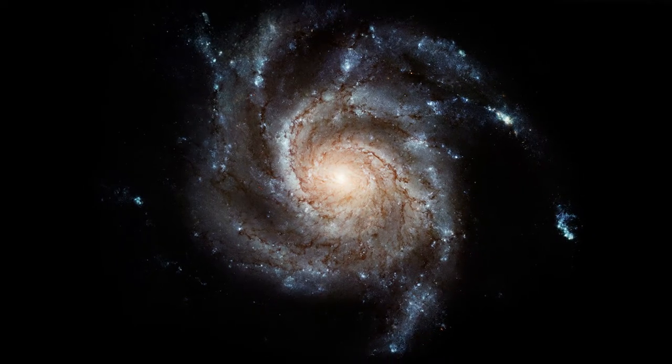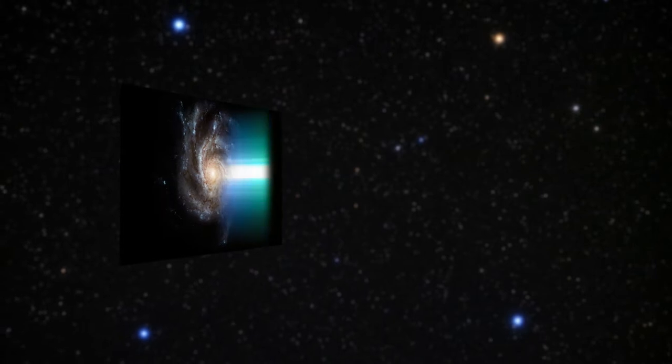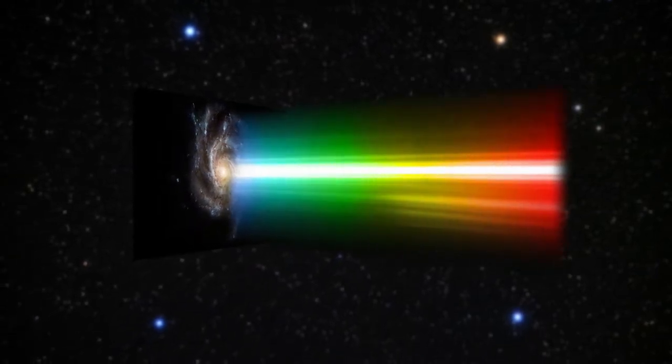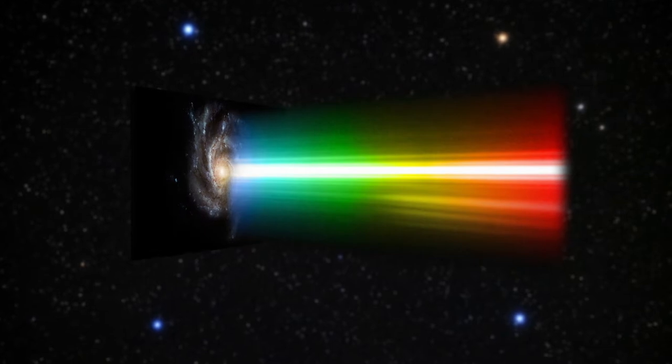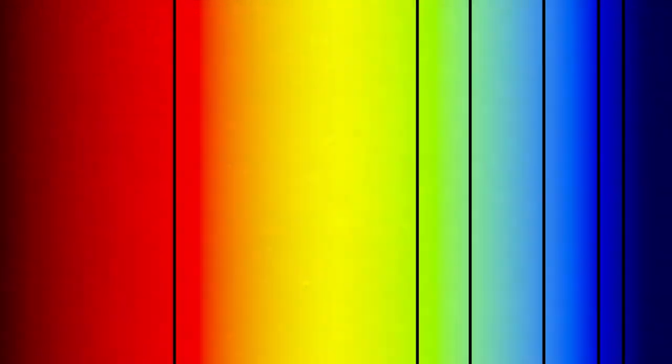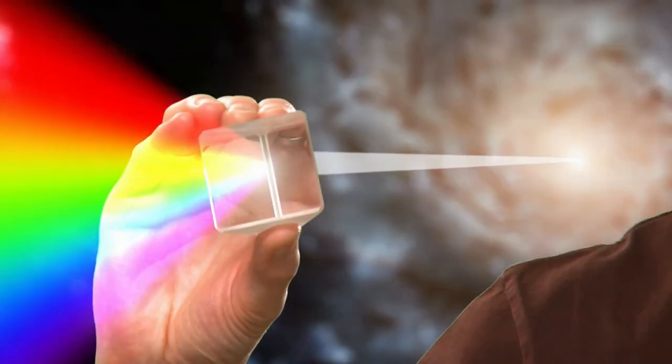Once the light enters the spectrograph, it is split by a dispersive optical element into its different components, or wavelengths, in order to be studied. This element acts much like rain droplets that disperse the light to form a rainbow. This dispersed light is then focused onto a detector, and it is seen as a spectrum.